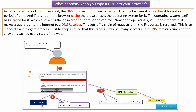First, the browser itself caches DNS for a short period of time. If the IP address is not in the browser cache, the browser asks the operating system, which also keeps the answer cached for a short period. If the operating system does not have it, it makes a query out to the internet to the DNS resolver. This sets off a chain of requests until the IP address is resolved — an elaborate and elegant process involving many servers in the DNS infrastructure, with the answer cached at every step.